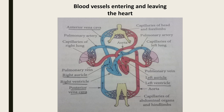Now let's look at the blood vessels entering and leaving the heart. There are some blood vessels entering the heart and some leaving the heart. The blood vessels entering the heart are the anterior vena cava and posterior vena cava.